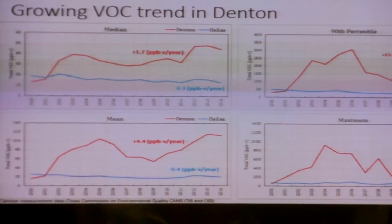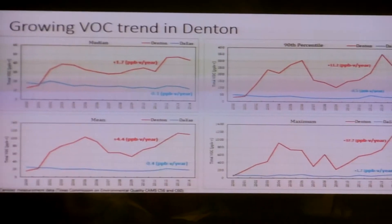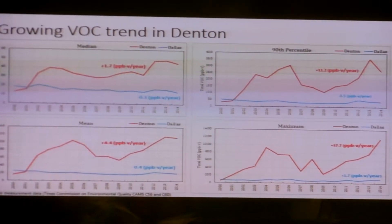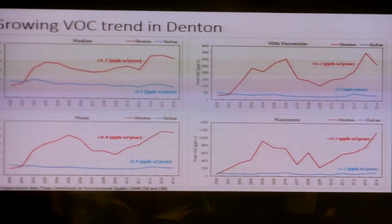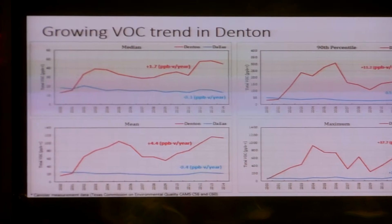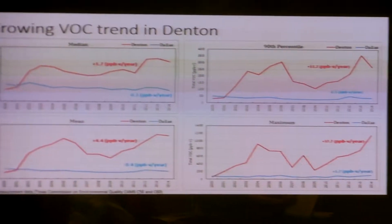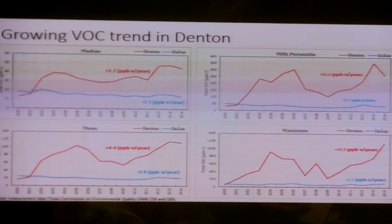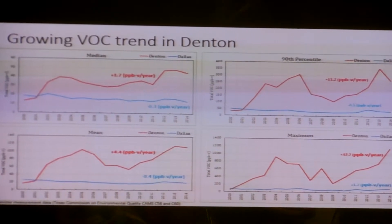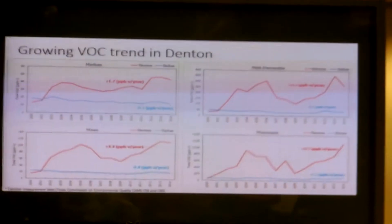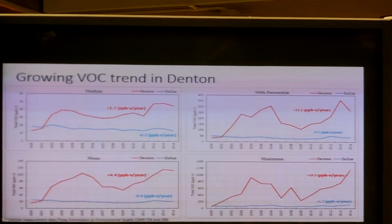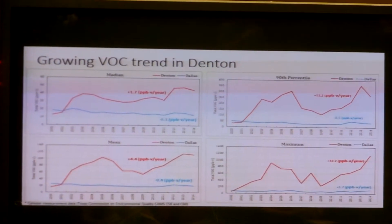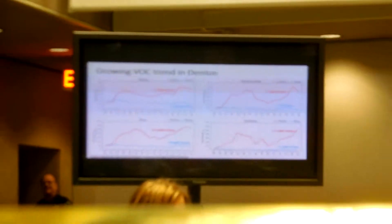I broke the graph down into separate graphs showing average and mean value trends as well as maximum and 90th percentile trends. On the left side is the median and mean value trends for Dallas versus Denton, and on the right side are the 90th percentile and maximum value trends. Both show a huge gap between Dallas and Denton. The median and mean are important for long-term ozone formation, while the maximum and 90th percentile are important for acute exposure and adverse health impacts.